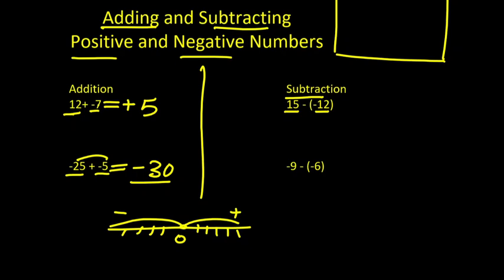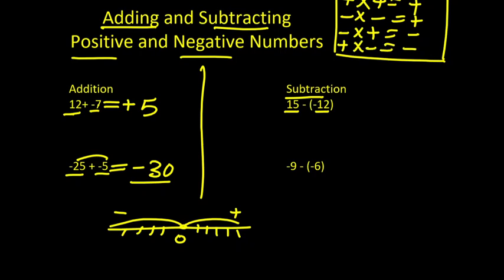When we multiply two same signs, we get a positive answer. Positive multiplied by positive equals positive. Negative multiplied by negative equals positive. But negative times positive equals negative, and positive times negative equals negative. So when the signs are the same and we multiply, we get a positive sign. When the signs are different and we multiply, we get a negative sign.